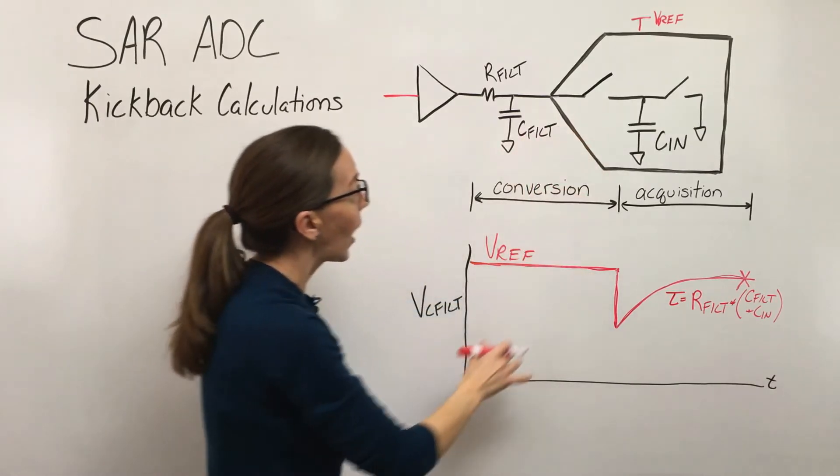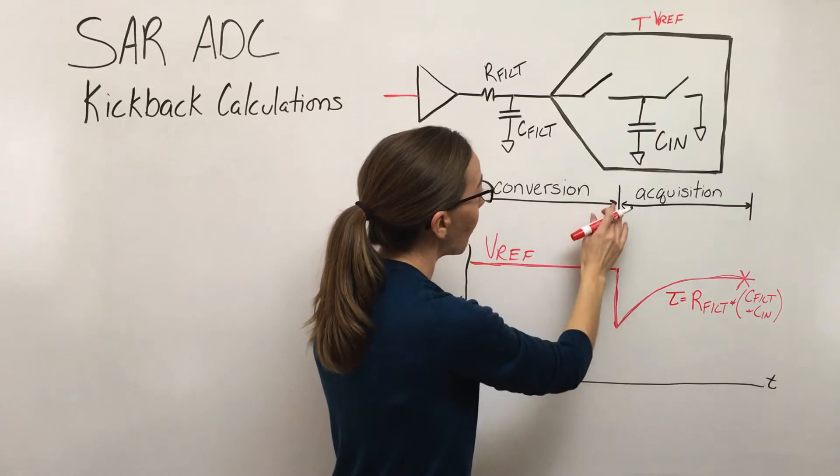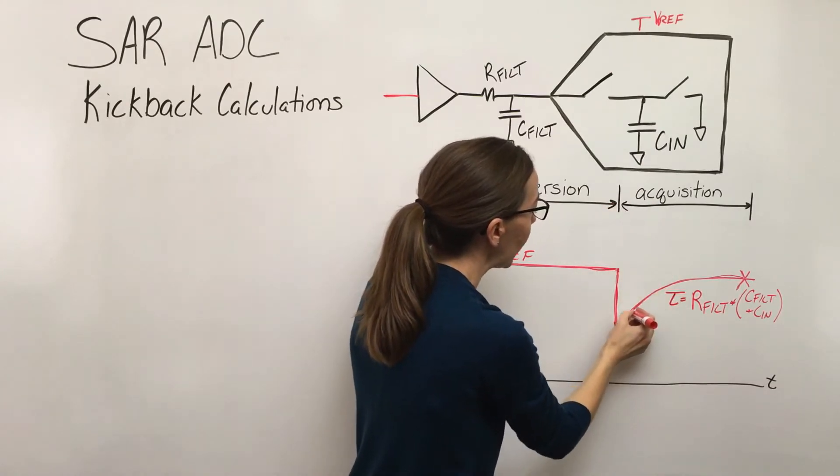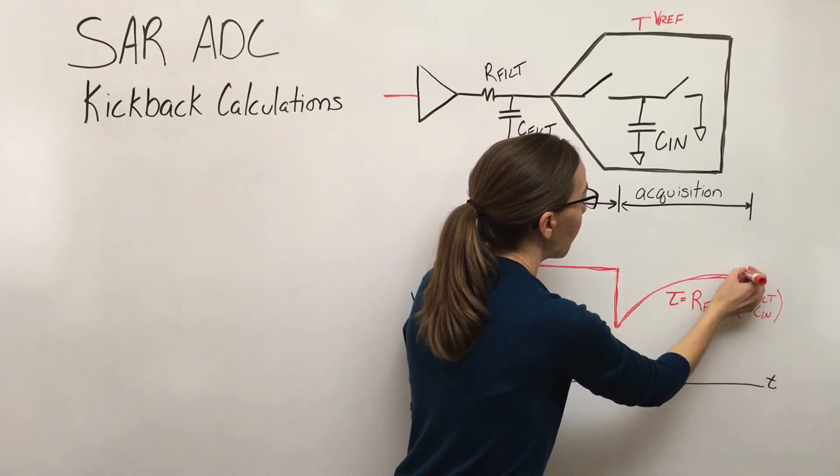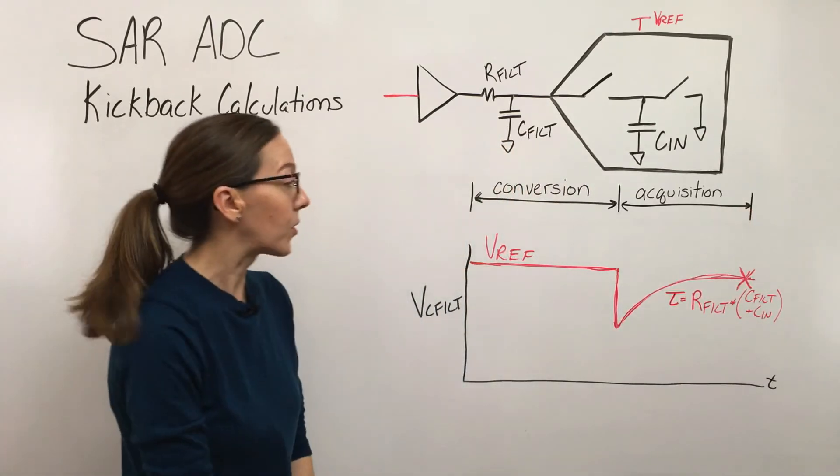We're driving v-ref into the ADC - that's what we're trying to sample. We get this large disturbance at the beginning of acquisition that we need to settle out to a reasonable degree before this acquisition cycle is over.